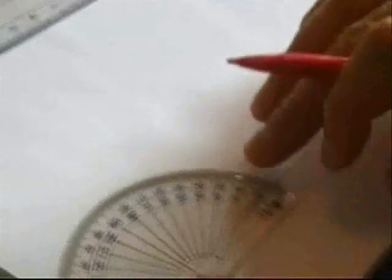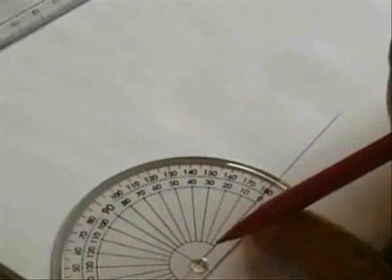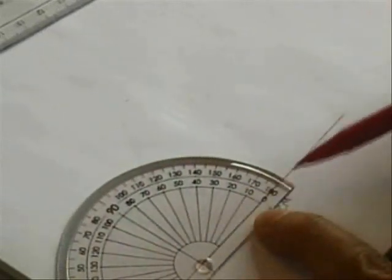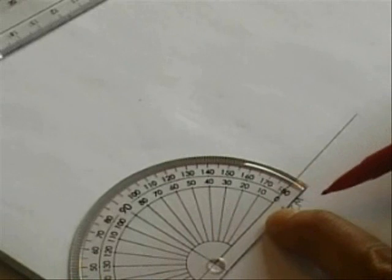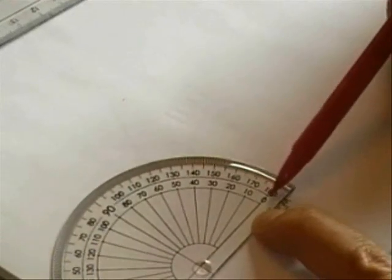I'm going to have one angle of 35 degrees, so I'll put my 35 degree angle here. Again remember, line the crosshairs, make sure it goes through zero. I'm looking to measure 35 degrees, so I'll be looking at the inside scale.